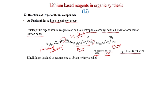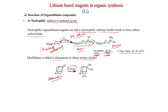Ethyl lithium added to adamantanone gives the tertiary alcohol in 97% yield. This process is general and different substrates can be used.